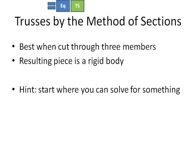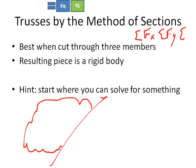Trusses by the method of sections is another special case of rigid body equilibrium. What you're going to do is take some massive truss, cut it in half, and say I'm going to consider only the free body diagram of this side. It's useful when the cut you make only goes through three members, because then you can solve for sum of forces in x, sum of forces in y, and sum of moments. Hint: start where you can actually solve for something.